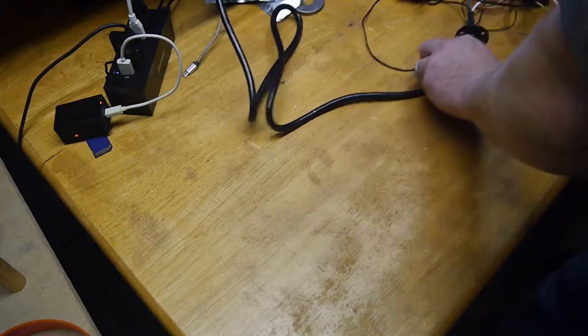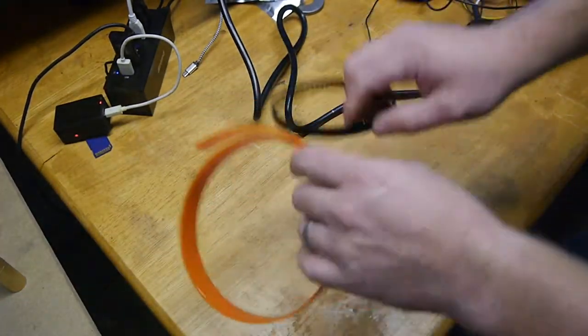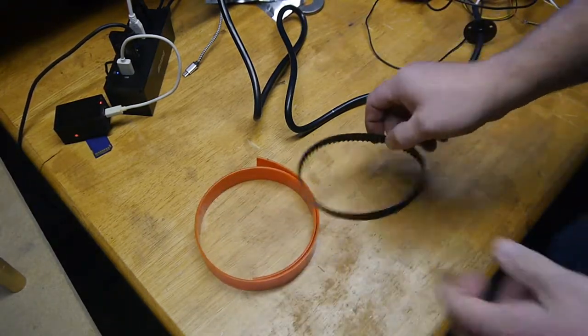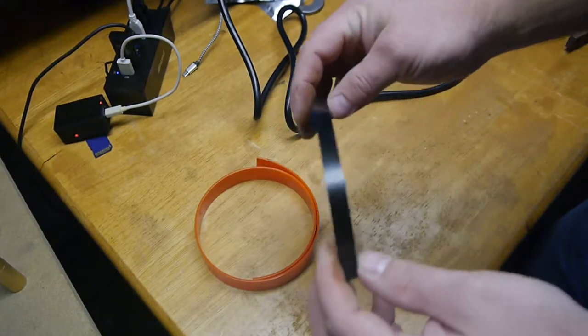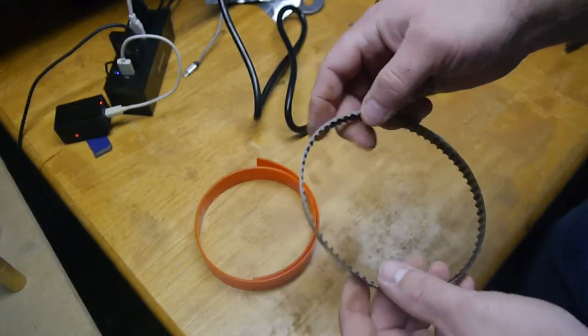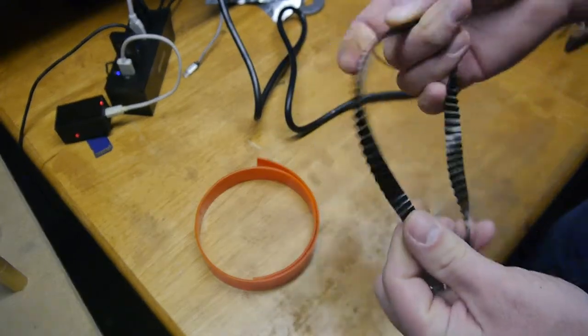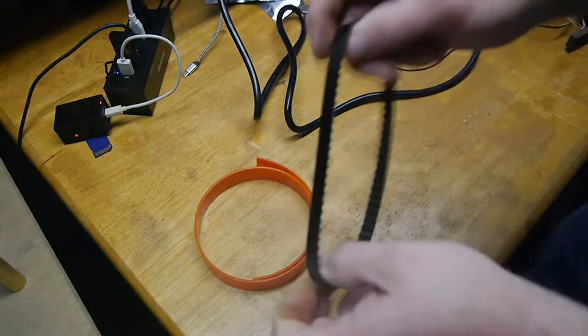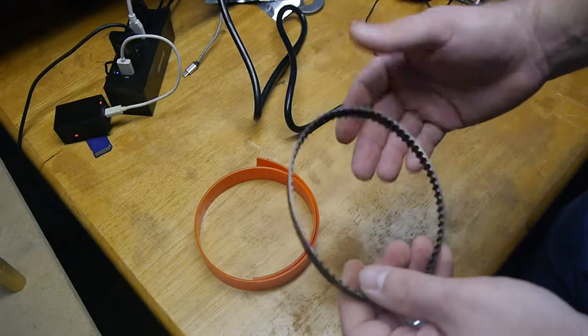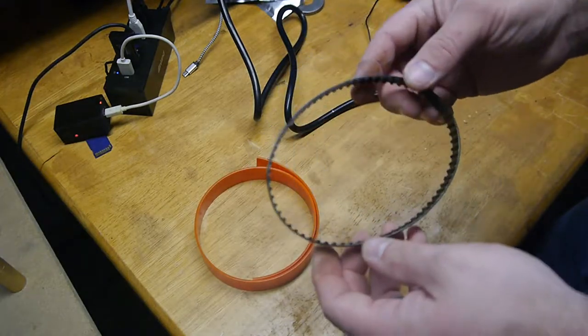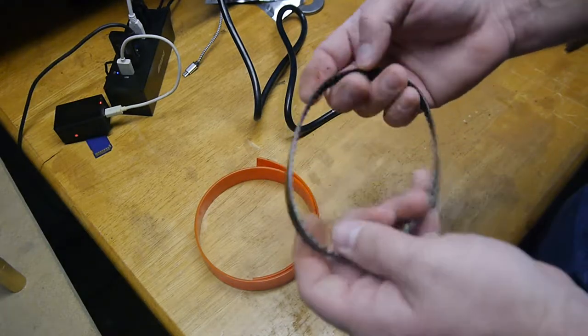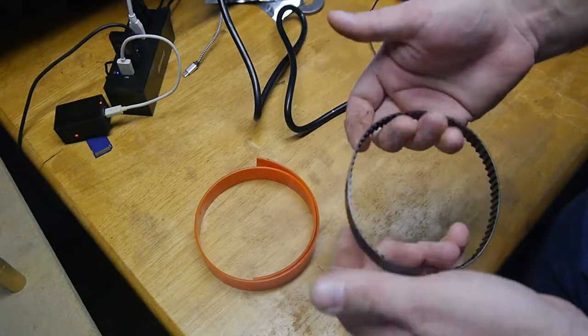All right, second. Drive belts, pulleys. Here are my two candidates for materials. I have, this is a XL series, 3/8ths of an inch wide drive belt. It's for a synchronous pulley. It's got teeth on the inside like that. And would offer sure traction. So that's a positive. It seems like it would be sturdier than this.